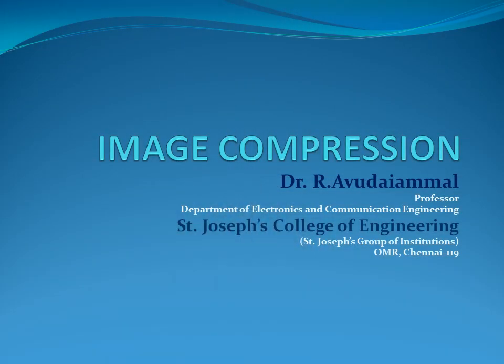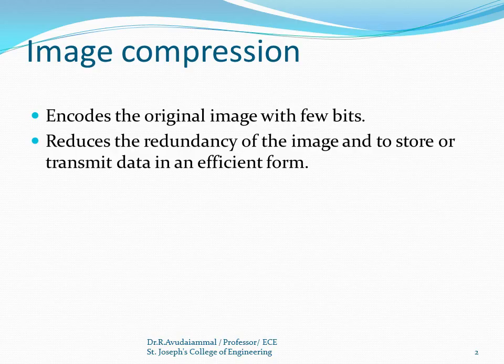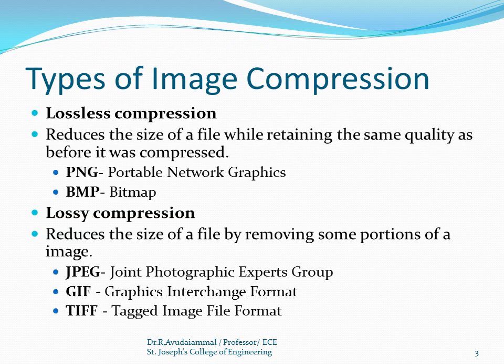Good morning. In this session we are going to discuss image compression. In image compression, it encodes the original image with fewer number of bits. The concept behind image compression is that it reduces the redundancy of the image — it exploits the correlation between the adjacent pixels of the image to store and transmit data with fewer number of bits. For image compression, there are two types: the first one is lossless compression and the second one is lossy compression.